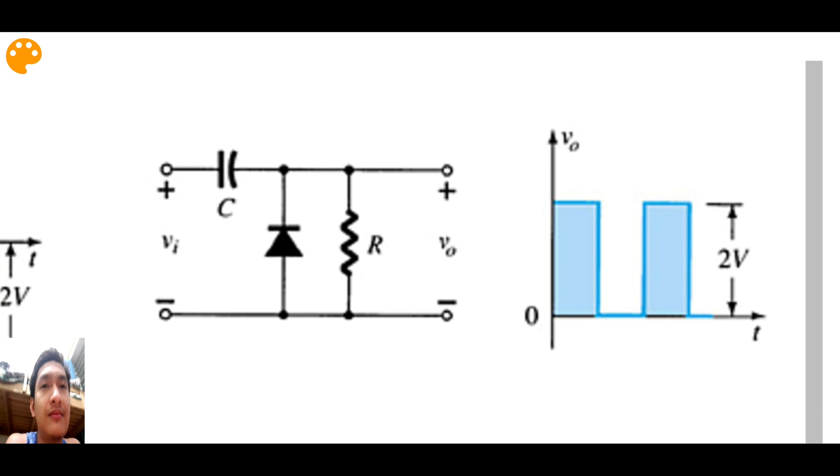So after that, you're going to analyze it now to the positive half cycle. However, during the positive half cycle, it was already known that the capacitor already has a charge of VI minus 0.7. And then in the positive half cycle, the polarity is this one. So your flow now becomes this and this one is reverse biased during the positive half cycle.